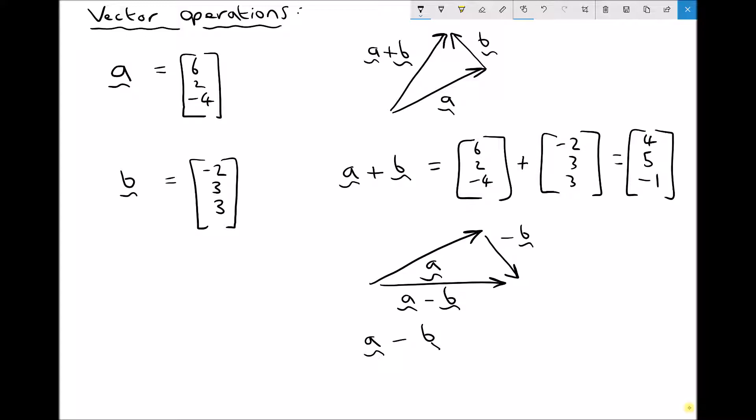Now our same rules apply. So we have A minus B equals 6, 2, minus 4, minus this time, minus 2, 3, 3.